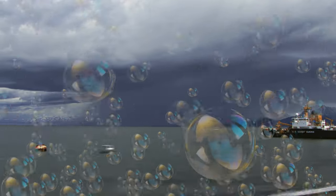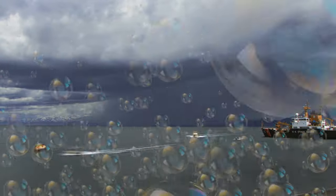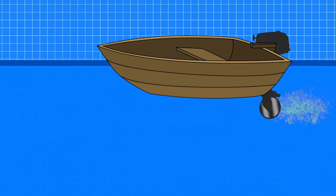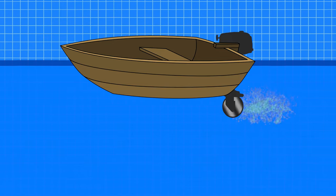Whether you realize it or not, you probably have seen cavitation for yourself. Those bubbles that float to the surface behind moving boats are actually results of cavitation. For boats specifically, as the propeller spins fast, it increases the localized speed of the water around it.